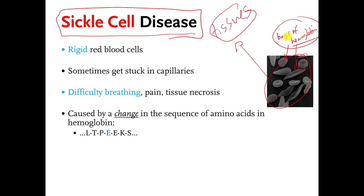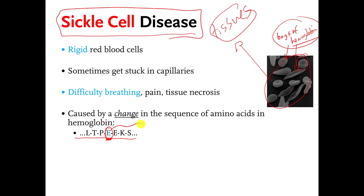If you look at people who do not have sickle cell disease and look at the sequence of amino acids in hemoglobin, they have an E — E is the one-letter abbreviation for glutamic acid. So they have a leucine amino acid connected to a threonine amino acid connected to proline and glutamic acid, then glutamic acid, etc. This is part of the hemoglobin protein molecule for people who do not have sickle cell disease.